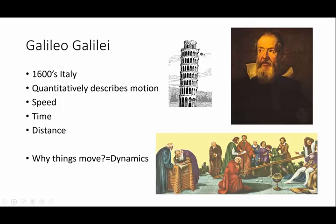The gentleman who was the first big scientist to do an awful lot of kinematics was Galileo Galilei. And Galileo Galilei lived in the 1600s in Italy. And he was one of the very first people to quantitatively describe motion. So quantitatively, if you remember, is data that involves numbers.